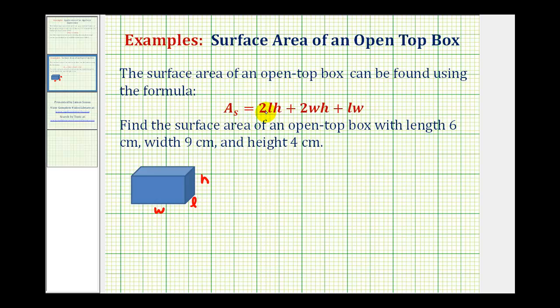Notice how in our formula we have 2 times L times H. That represents the area of the right side and left side of the box. 2 times W times H would represent the area of the front and the back of the box. Notice how we have L times W, which would represent the area of the bottom of the box. And then we have 1 of these because there is no top.